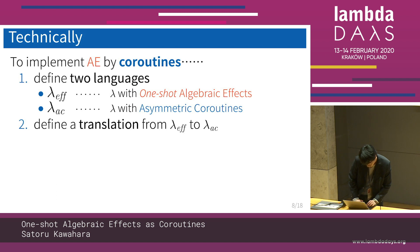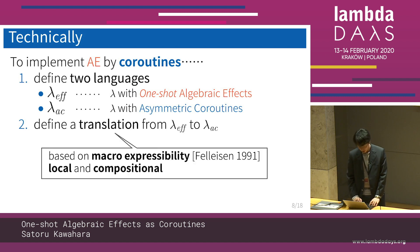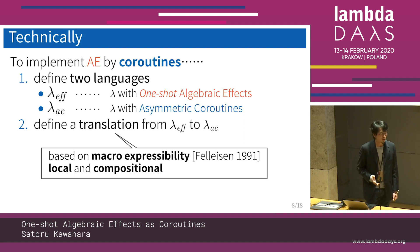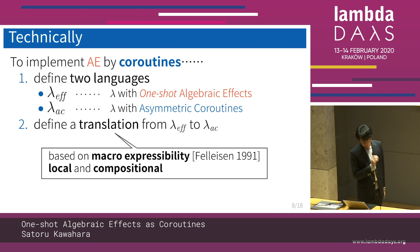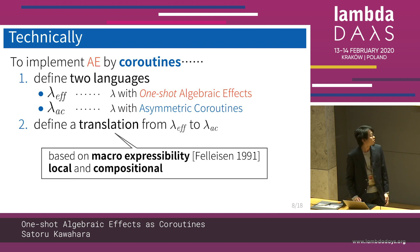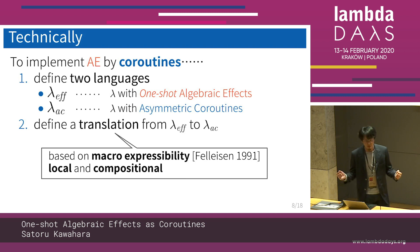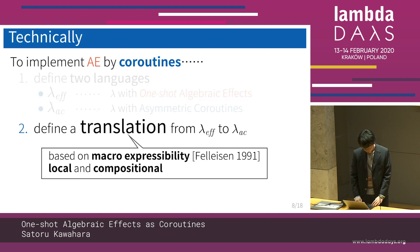The important property of our translation is macro-expressivity as defined by Felleisen. The translation is local and compositional, which is a very strong and pleasant property. Next, we talk about the second step in more detail.